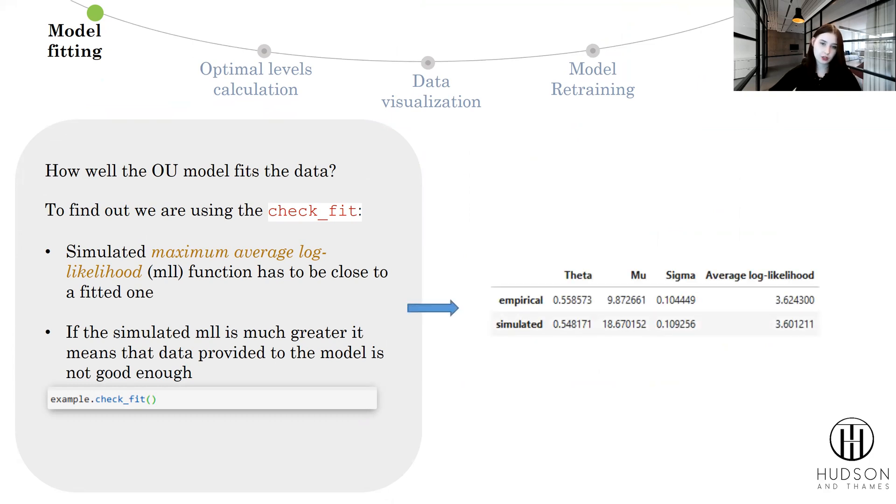During the check_fit stage, it is important that your simulated maximum average log-likelihood function has to be close to one. If the simulated maximum log-likelihood is much greater, it means that the data you provided to the model is not good enough, maybe even unusable for further proceedings. You need to maybe reconsider your data choice.